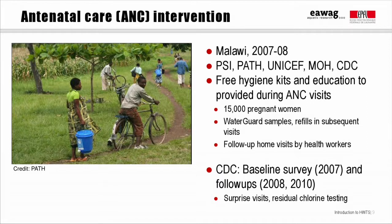First, antenatal care, or ANC. This example is from Malawi, where Population Services International had been marketing WaterGuard since 2002. Several years on, awareness was high but uptake was still low. In 2007, the Ministry of Health launched a project to promote HWTS alongside antenatal care visits. 15,000 pregnant women attending their first antenatal care visits were given hygiene promotion and free hygiene kits, which included a plastic bucket with a tap and samples of WaterGuard. The women were then visited in their homes afterwards by health workers, and if they returned to the health clinic for their second, third, or fourth ANC visits, they were given free WaterGuard refills.